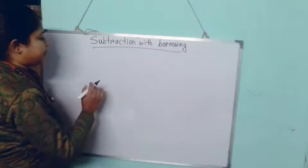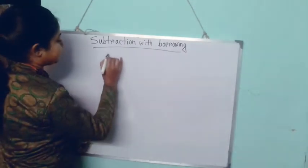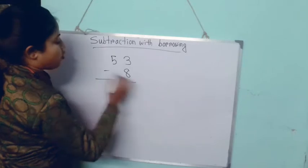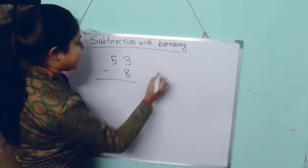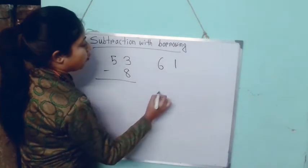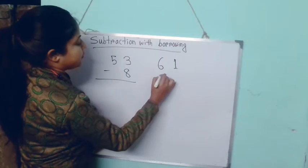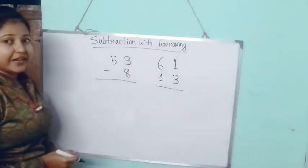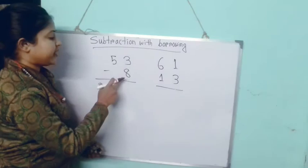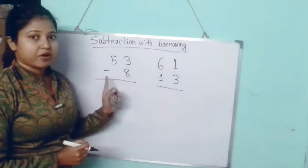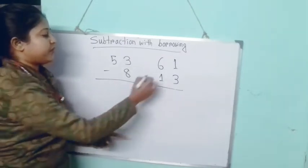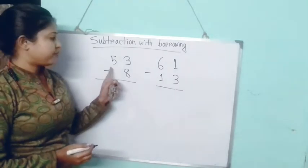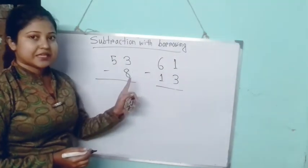So let's see how we can subtract with borrowing. Let's assume I am writing here two numbers: 53 and I have to subtract 8. And another one: 61 and I have to subtract 13. So the first one is 53 subtract 8, and the second one is 61 subtract 13.